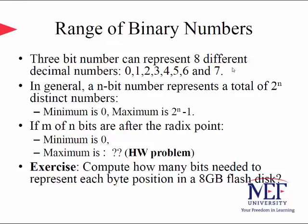Since we are interested in representing discrete quantities in terms of binary bit sequences, it is useful to consider the range of binary numbers. For example, three bits can represent two to the three equals eight possibilities — the decimal numbers zero through seven. In general, an n-bit number represents a total of two to the n distinct numbers. The minimum is all bits zero, and the maximum, with all bits set to one, is two to the n minus one.